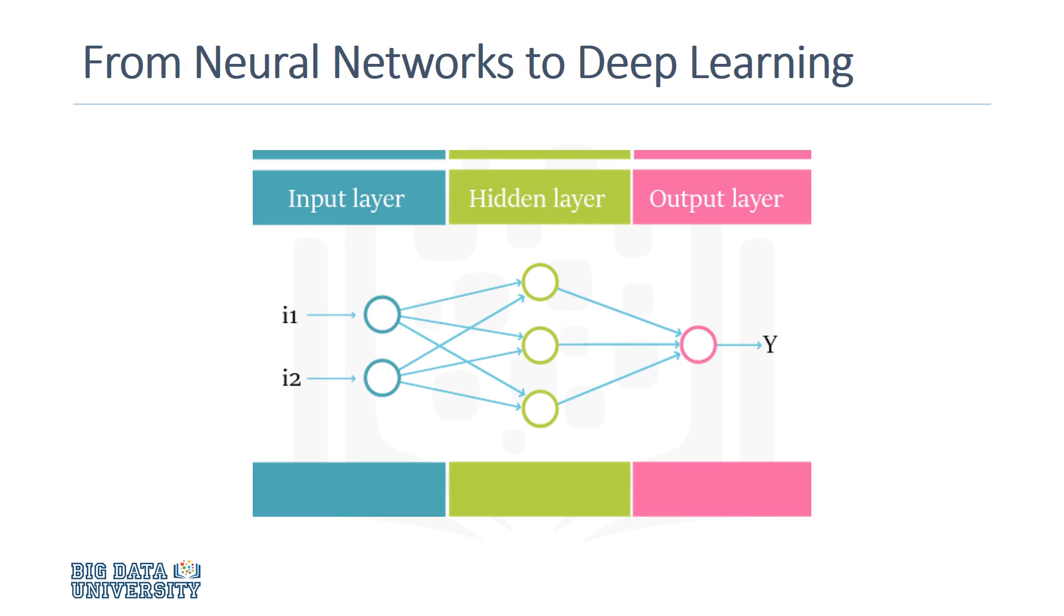As a quick overview, a neural network is a machine learning model inspired by the brain. Data comes into an input layer and flows across to an output layer. The hidden layers in between are responsible for running calculations. The simple neural network you see here is known as a multi-layer perceptron.